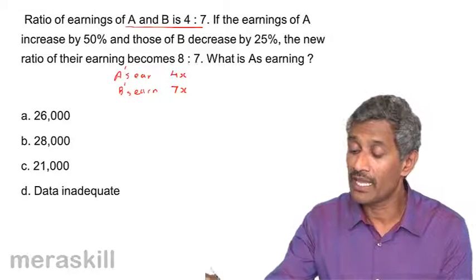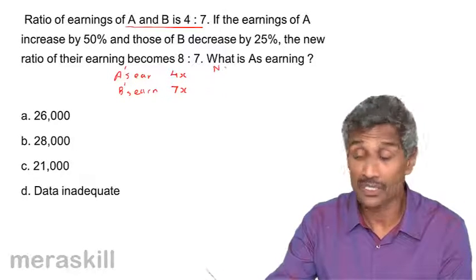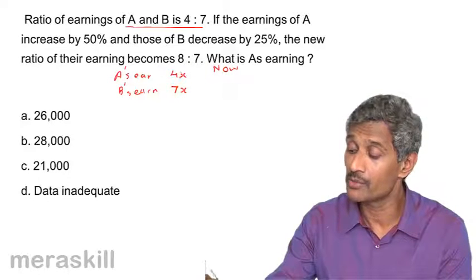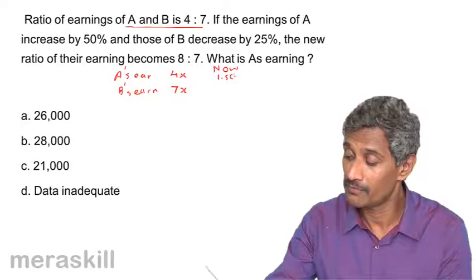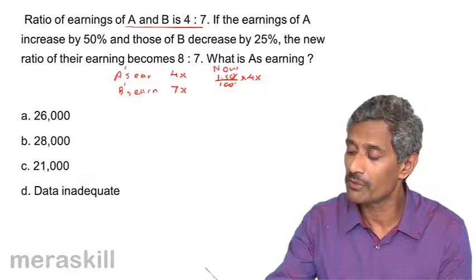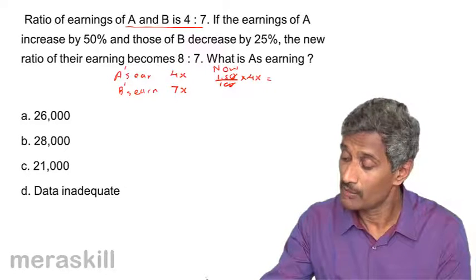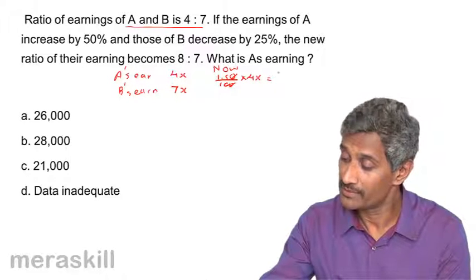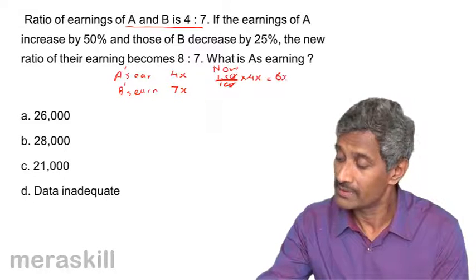If the earnings of A increases by 50%, so now after the increase, A's earnings is going to be 50% more than this. That is 150 upon 100 into 4x, which turns out to be 1.5 into 4x. So that is turning out to be 6x.